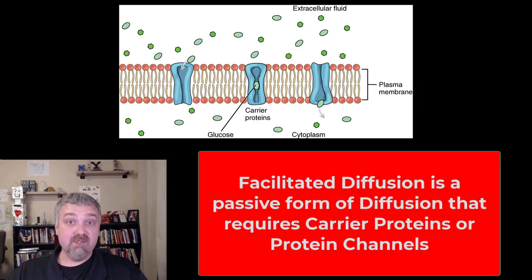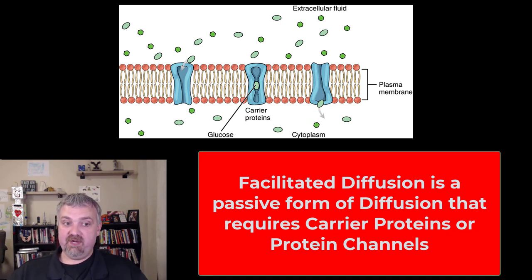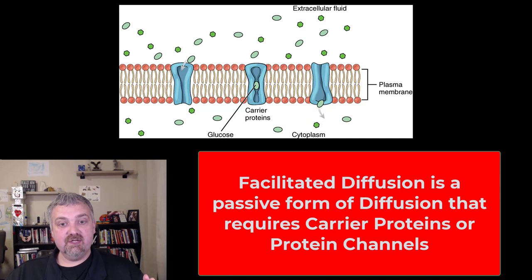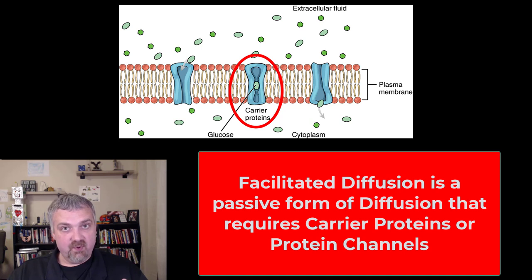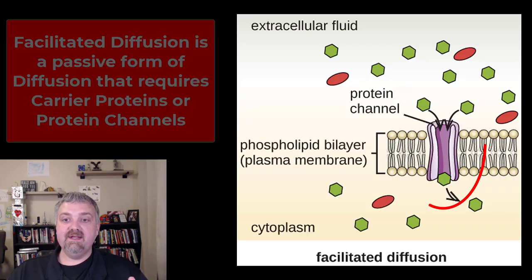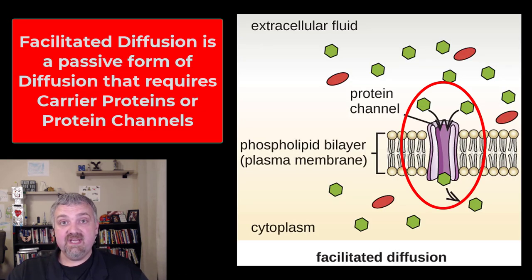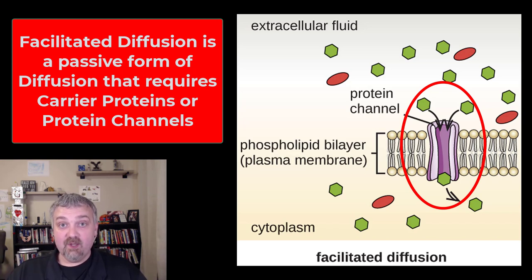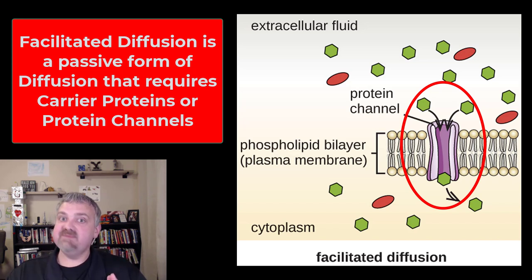Simple diffusion isn't always that simple — some things are too large, non-polar, or charged, so they can't just travel right through the cell membrane. That's where facilitated diffusion comes in. Facilitated diffusion is still a passive process and does not require energy. For example, glucose can't just travel through the cell membrane, so it's carried by the glucose transporter, which is a carrier protein. Sodium also can't travel through on its own, so it travels through a protein channel. It's still diffusion — movement from high to low concentration, still passive — but you need either a protein channel or a protein transporter to do the job.